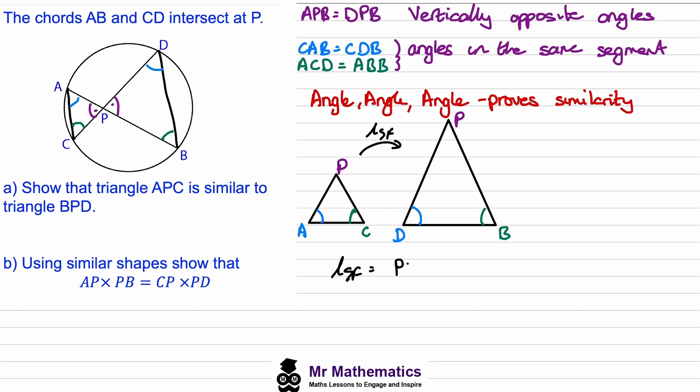So PB divided by CP will be exactly the same as this length divided by this length, PD. So PD divided by AP. And now we can prove this property by moving this AP to the left-hand side and the CP to the right-hand side.